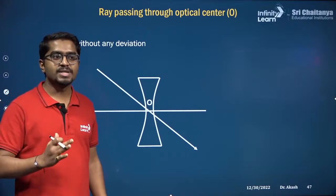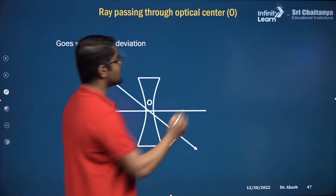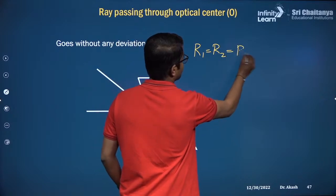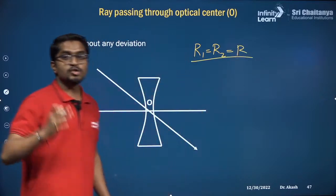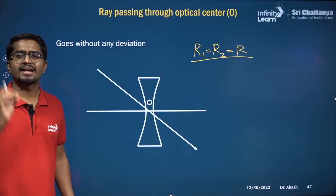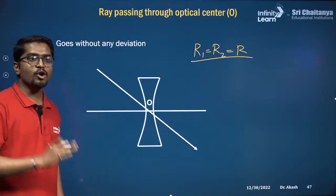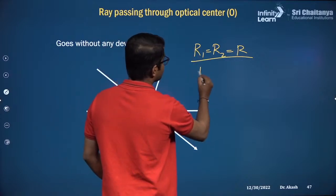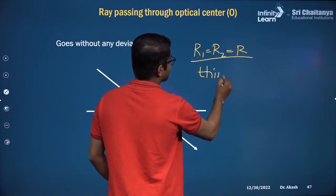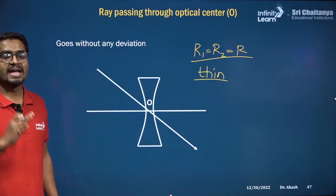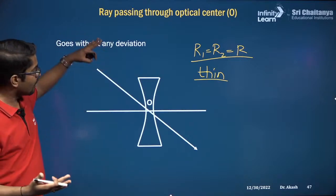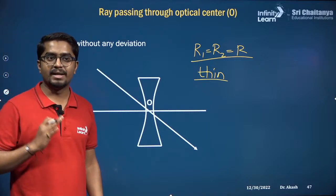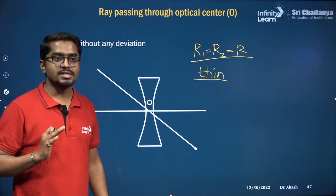To summarize the assumptions: first, R1 = R2 = R; we study only biconvex or biconcave lenses. Second, these are thin lenses — the equations we study are only applicable to thin lenses. For thicker lenses, different equations apply.